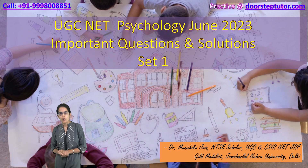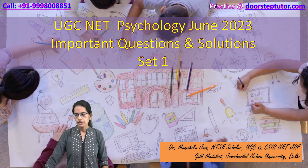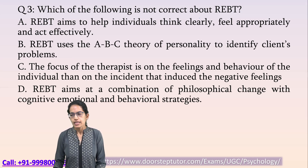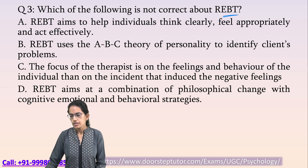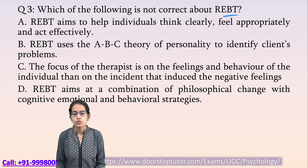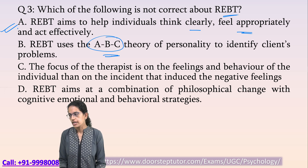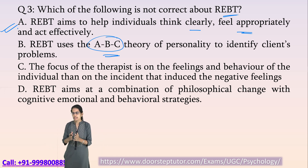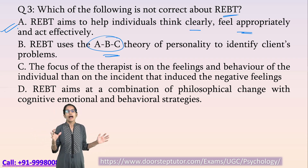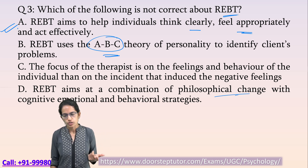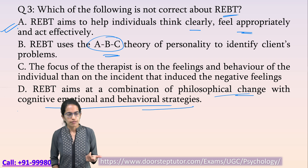Let's solve some important questions from the June psychology paper for your NET examination. The first question talks about REBT, that is Rational Emotive Behavior Therapy. This therapy helps individuals think clearly and appropriately. It uses the ABC component of personality to remove illogical views from the mind and introduce a clear vision. It is also a combination of philosophical change with cognitive, emotional, and behavioral strategies.